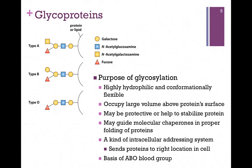And of course, it's the basis of the ABO blood grouping. Here's a figure from your book illustrating the different types of carbohydrates present on blood types A, B, and O. You don't have to remember the differences here, just the purpose.